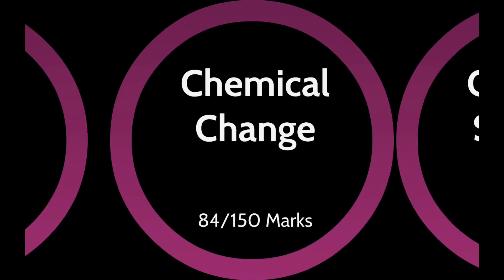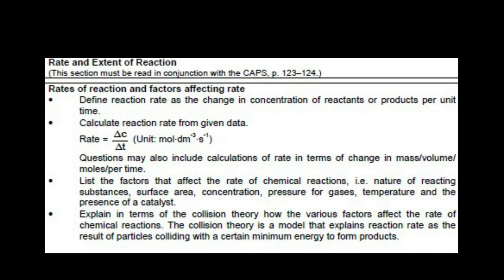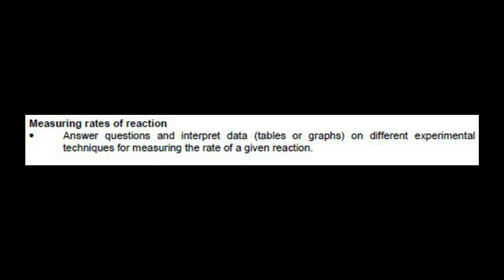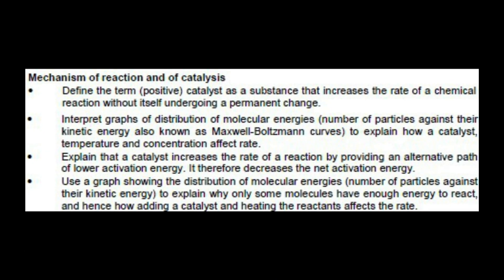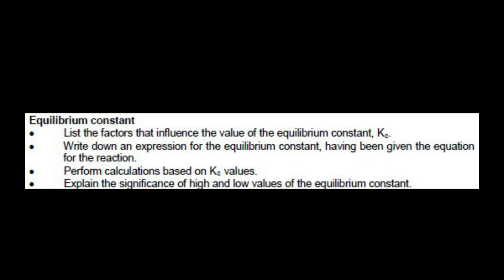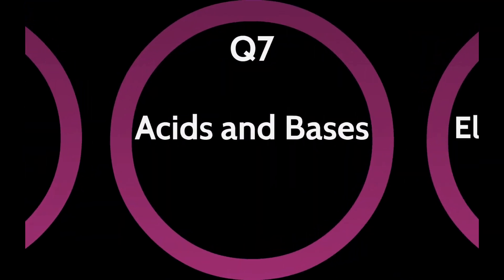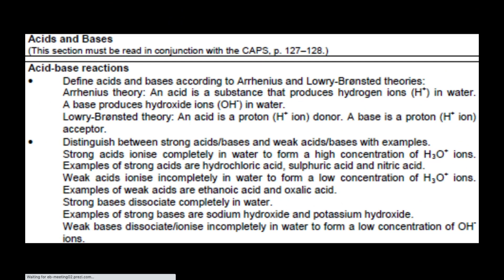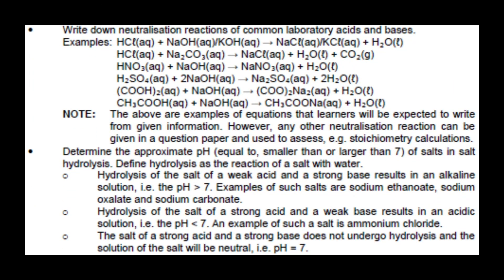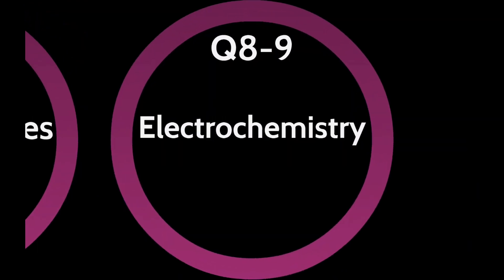The next section is chemical change for 84 out of the 150 marks. Question 5 is on rates and extent of a reaction, Question 6 on chemical equilibrium, Question 7 on acids and bases, and Question 8 and 9 on electrochemistry.